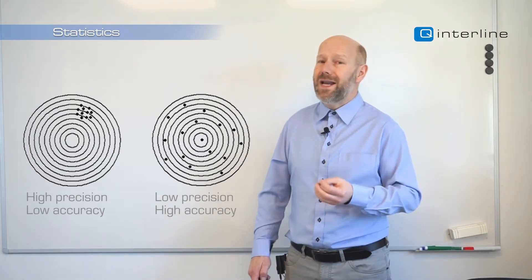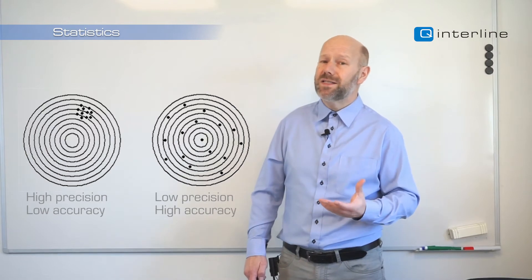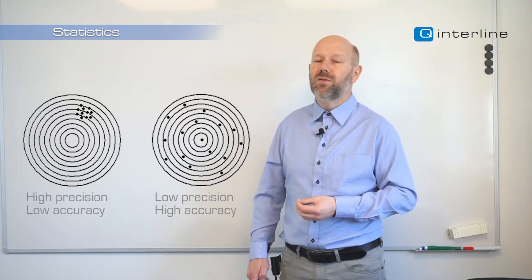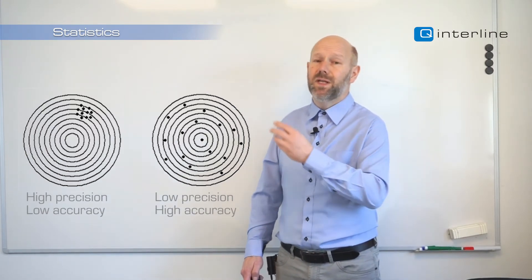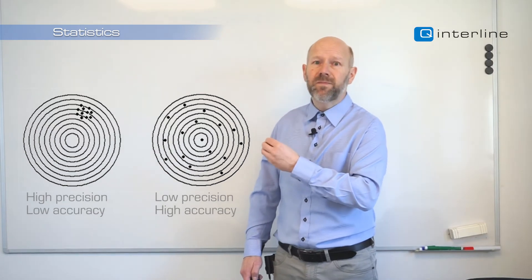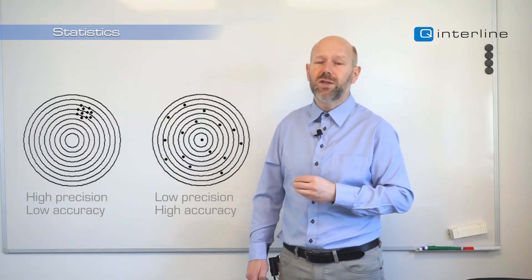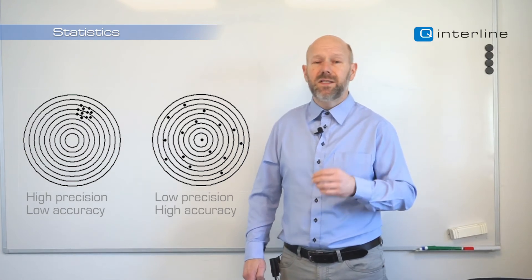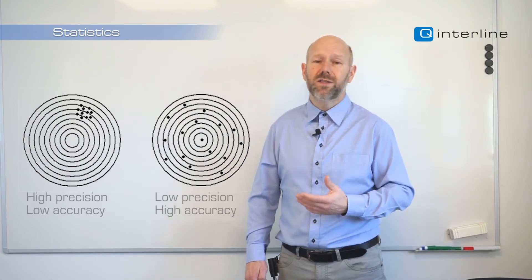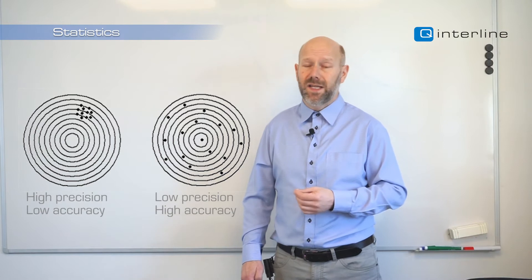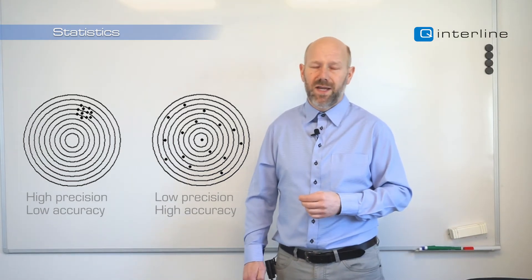On the contrary, an NIR or any other of these fast analyzers may quite often have a very nice repeatability or precision. Hence, we will see the grouping of the shots, but they may have a systematic error stemming from errors in the calibration or validation phase, which we will dive into.